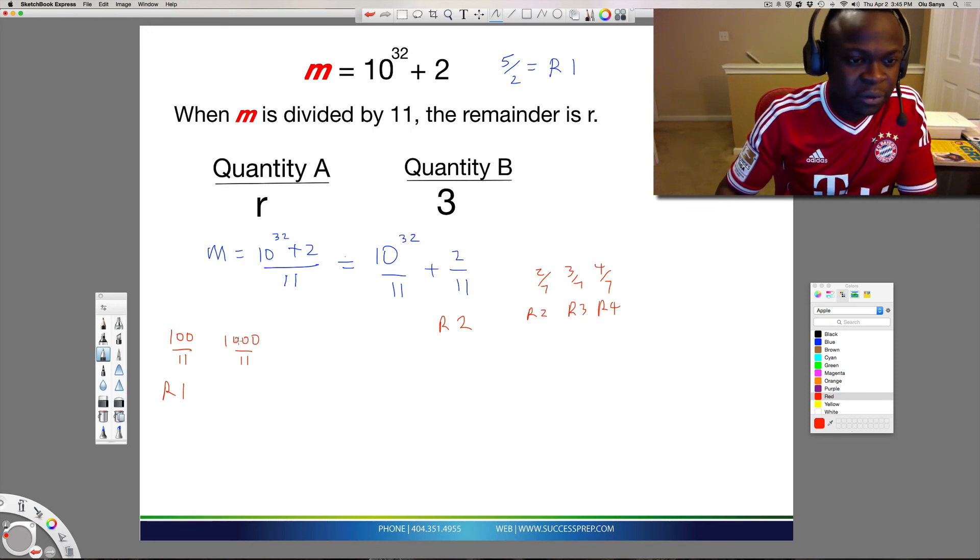Same thing here. 11 goes into 1,000, it's going to go as far as 999. So again, the remainder is 1. So what this is teaching me is if I just have a multiple of 10 up here and I'm dividing by 11, I'm expecting this to have a remainder of 1 when 11 goes into this big number because of what I learned from here.